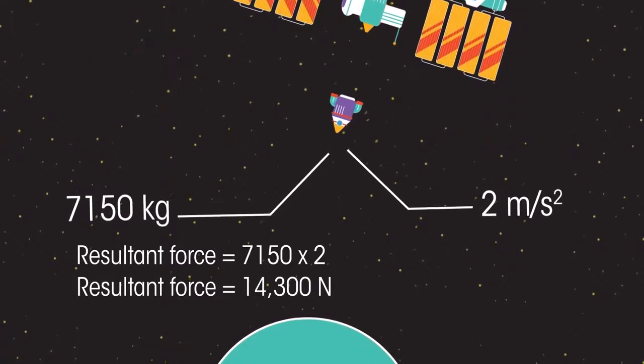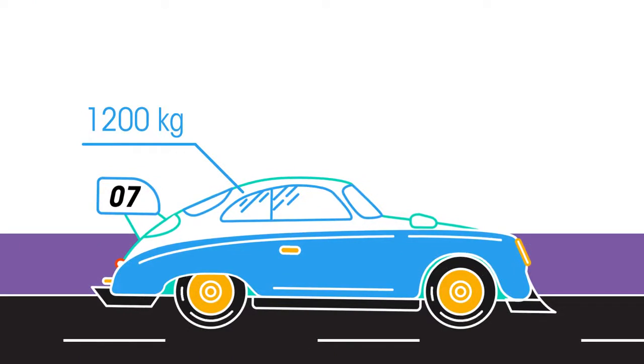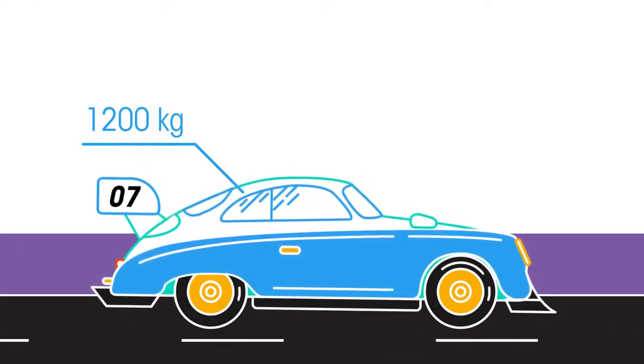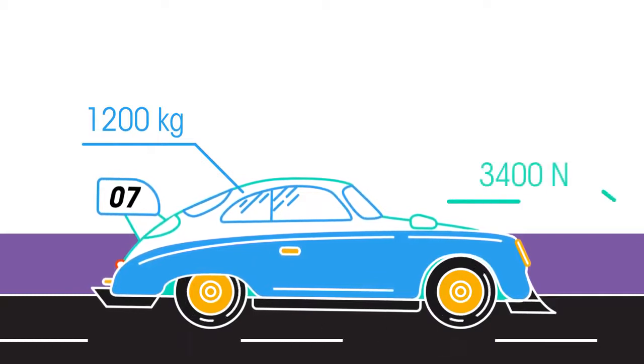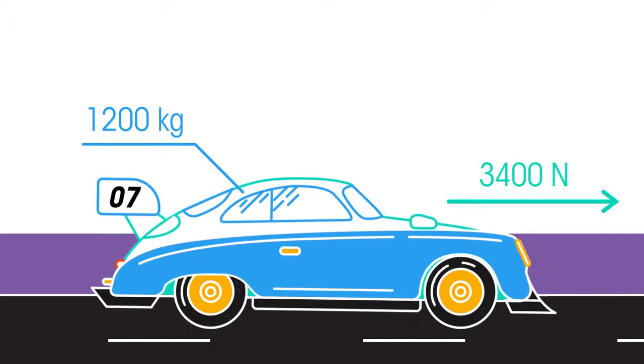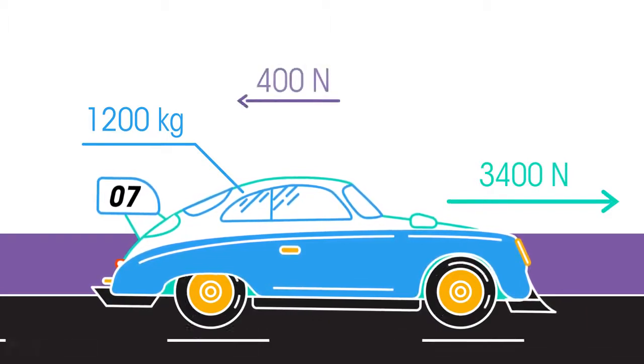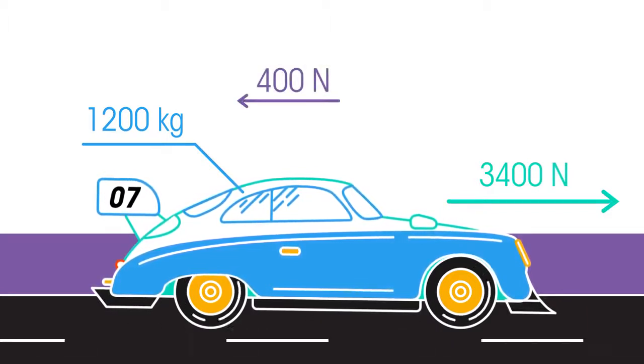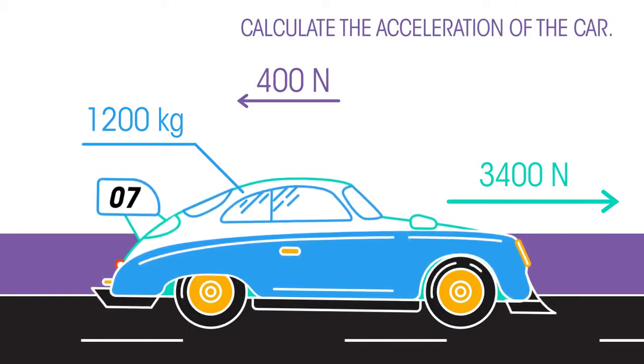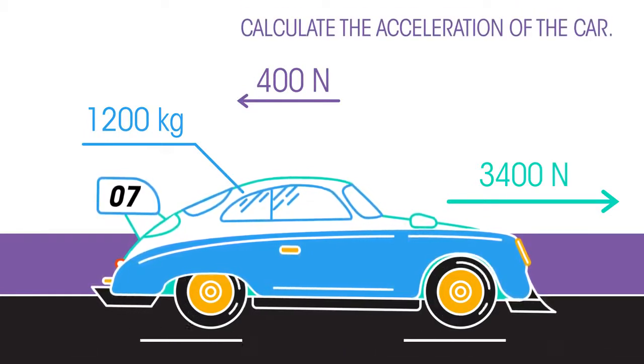How about this example? A car of mass 1,200 kilograms starts moving and accelerates on a racetrack. The car's engine produces a constant force of 3,400 newtons. A constant frictional force of 400 newtons acts on the car. Calculate the acceleration of the car. Pause the video while you work it out.